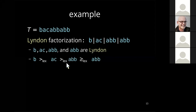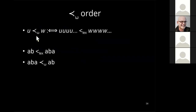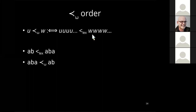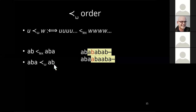For our example we perform the Lyndon factorization and see that all factors are Lyndon words with the non-increasing order property. Next, the omega order: we define it for two strings u and w such that u is smaller under the omega order if its infinite concatenation is lexicographically smaller than the infinite concatenation of w. For instance, 'ab' is smaller than 'aba' in lexicographic order, but in the omega order it is the contrary — by comparing infinite concatenations we see a mismatch at the fourth character showing 'aba' is omega-smaller than 'ab'.